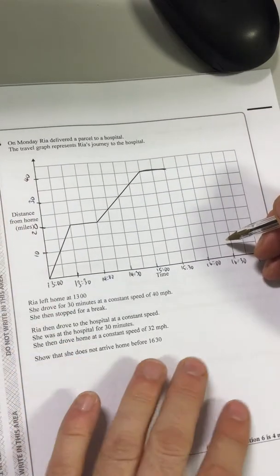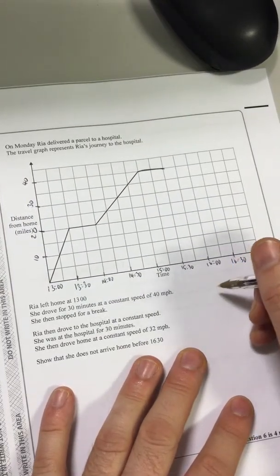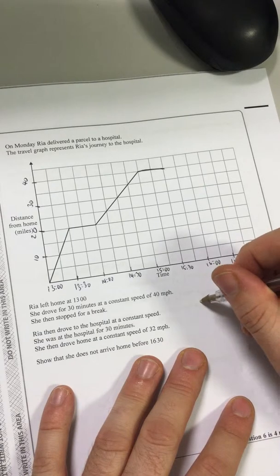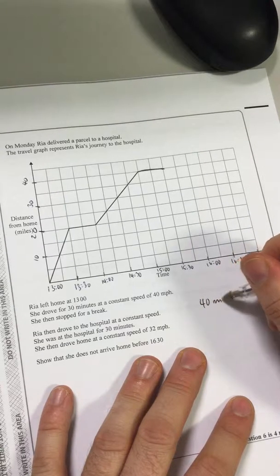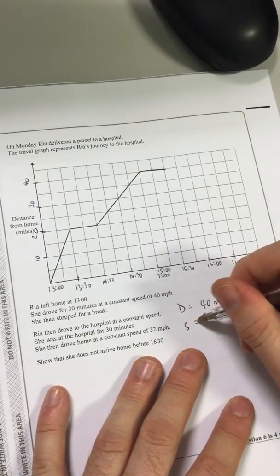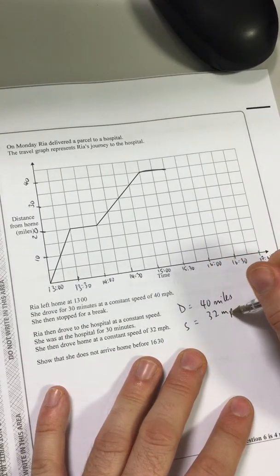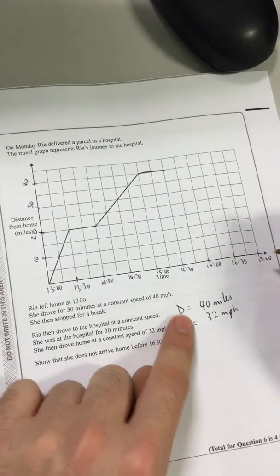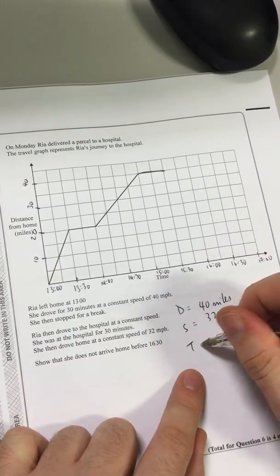Okay, so we need to figure out how long it's going to take her. So she's got 40 miles. Okay, we know her speed. So that's distance. We know her speed is 32 miles an hour. Okay, and if we want to know how long it's going to take her...